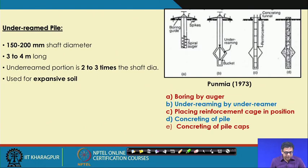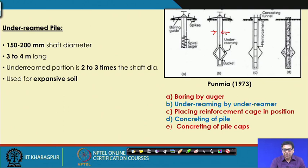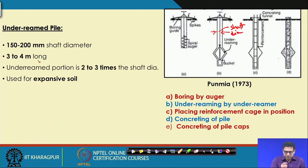What is an under-rim pile? The under-rim pile is a pile which is provided with a bulb. It generally has a 150 to 200 millimeter shaft diameter. It is 3 to 4 meters long and the under-rim portion is 2 to 3 times the shaft diameter.